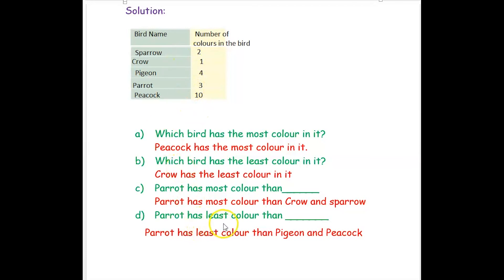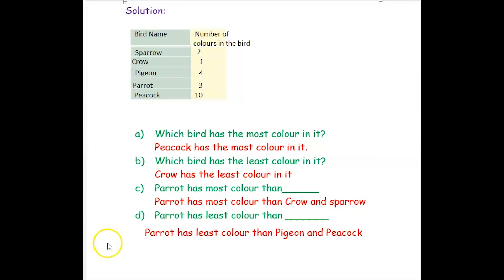Next question: parrot has least colors than whom? Least means less. Parrot has less colors than pigeon and peacock, because pigeon has four and peacock has ten, while parrot has only three. So parrot has least colors than pigeon and peacock. Hope you have understood all the concepts — how to make the smart chart and how to answer the given questions based on it. Thank you for watching the video.